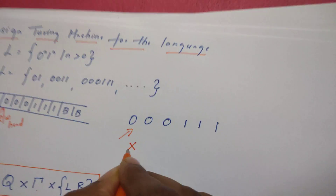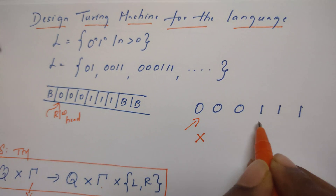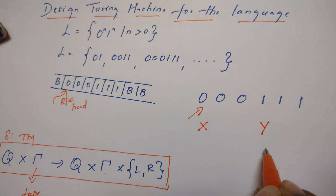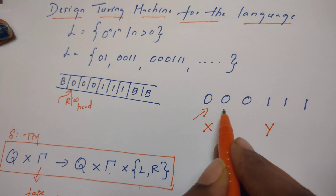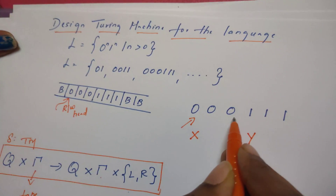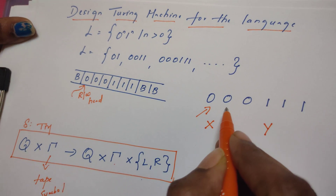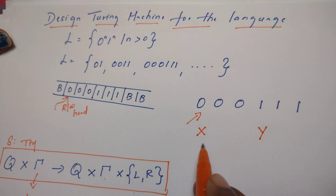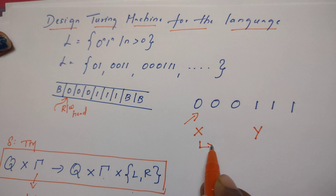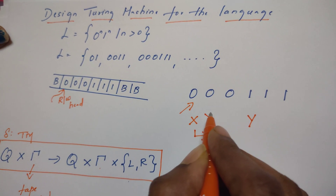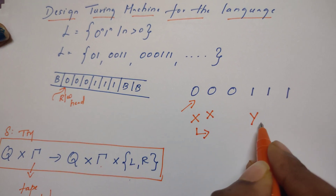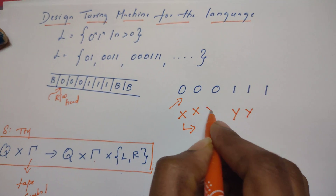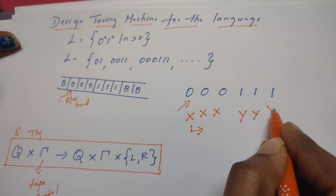When it reads a zero, that zero is replaced by x, and it continues to move right in search of a one. When it reads a one, that one is replaced by y, and it comes back left in search of the leftmost zero. The Turing machine must reach x, then the head direction changes right. It reads the next zero, replaces it with x, moves right, finds the next one, and replaces it with y.